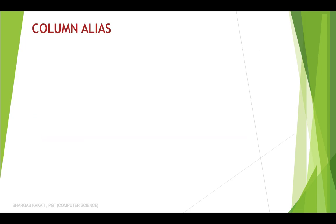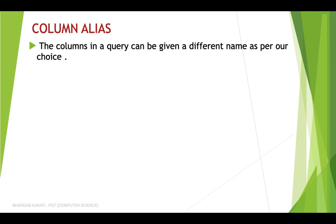Let's get started with the concept of column alias. What is column alias? The columns in a query can be given a different name as per our choice. By default the columns in a query will have some names, but if I want I can change the default names and put my own alternative name. This concept is known as column alias — putting a new name to an existing column name.